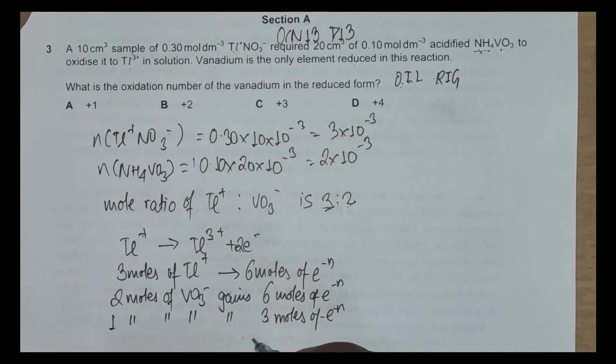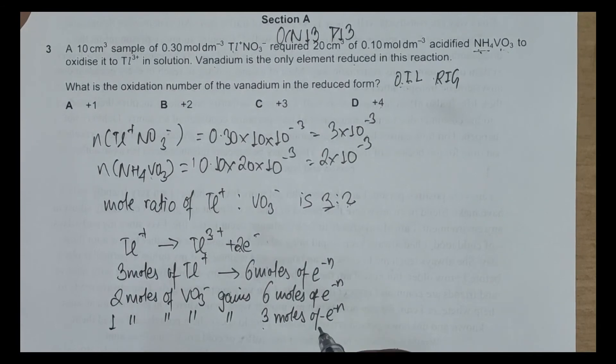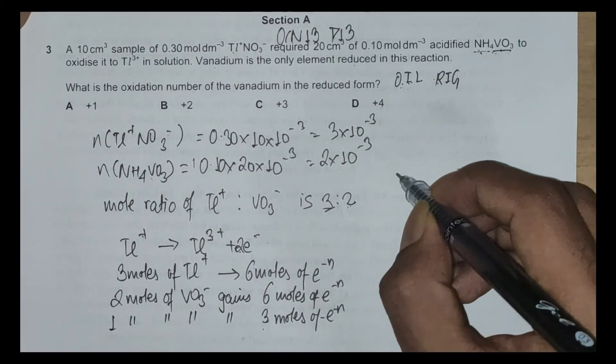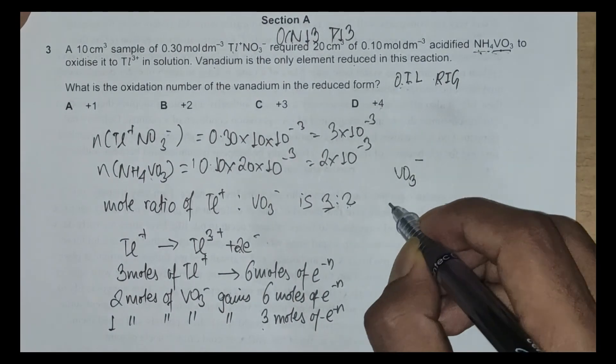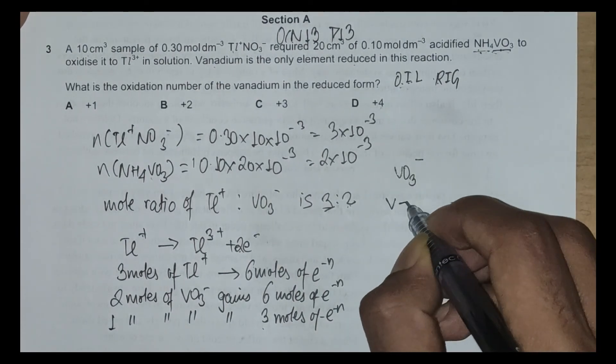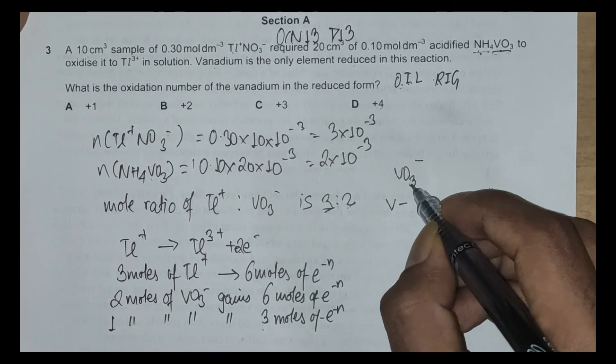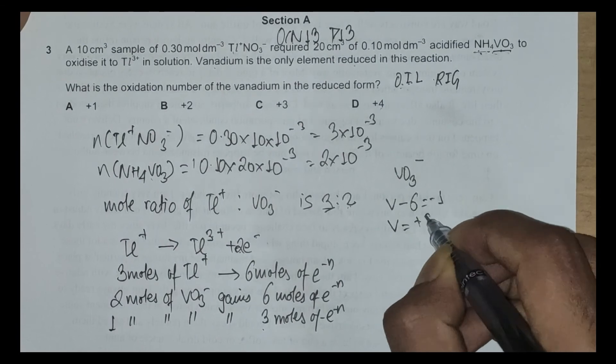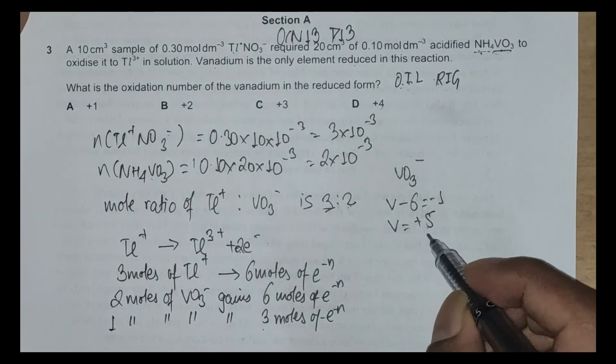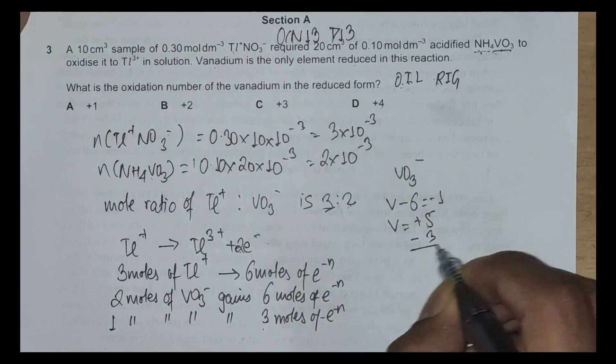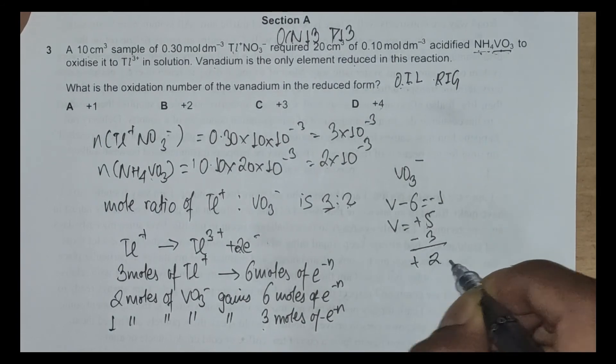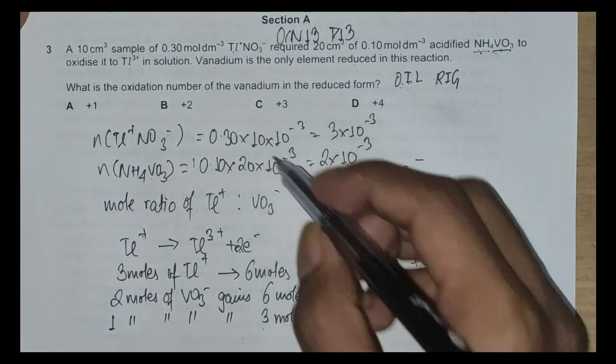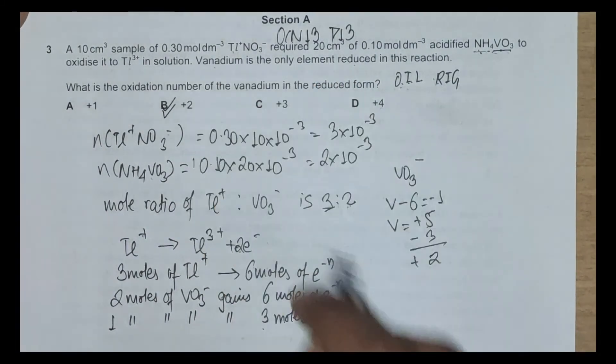Initially VO₃⁻ has oxidation number of V and oxygen is -2. -2 multiplied by 3 is -6 equals to -1, so V is +5. And when we reduce this by 3 units, which is -3, the oxidation number is +2. So what is the oxidation number of vanadium in the reduced form? It's +2, which makes B the final correct answer.